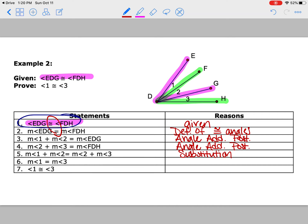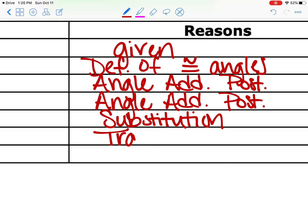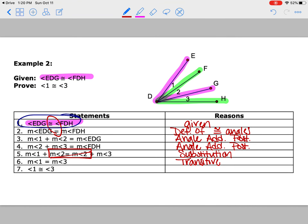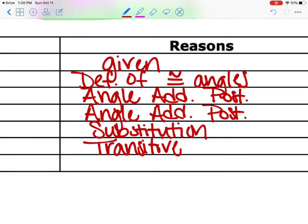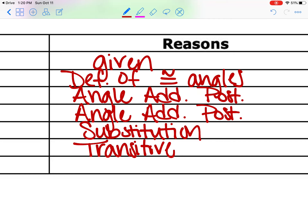Going from step five to step six, they're taking that middleman of angle 2 and cutting it out — so that is the transitive property. And going from step six to step seven, the only difference is going from equal to congruent. Notice this one is backwards from step one to step two, but it doesn't matter what order they go in — if you're going from congruent to equal or equal to congruent, it's always going to be definition of congruent segments or angles. So here: definition of congruent angles.